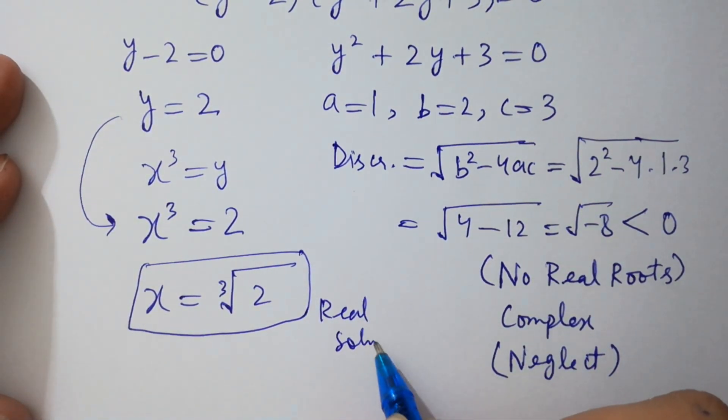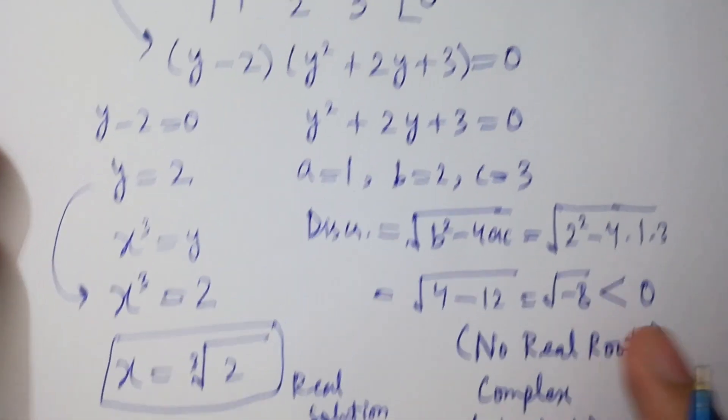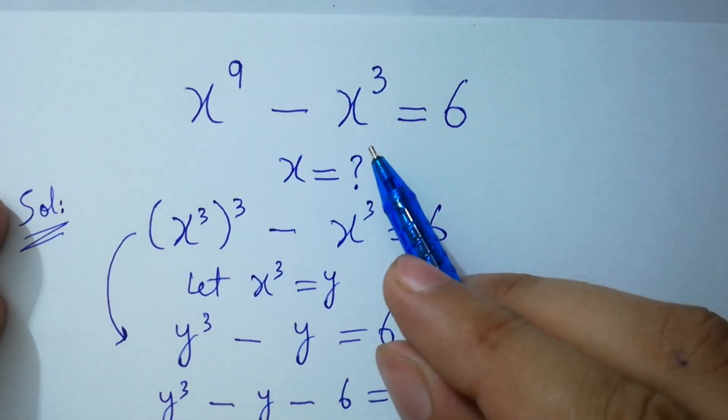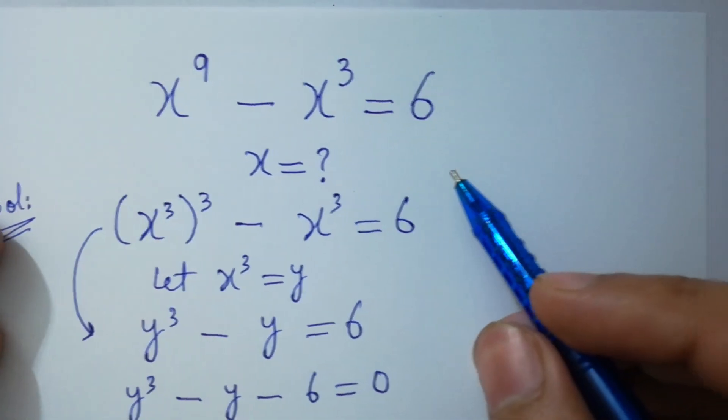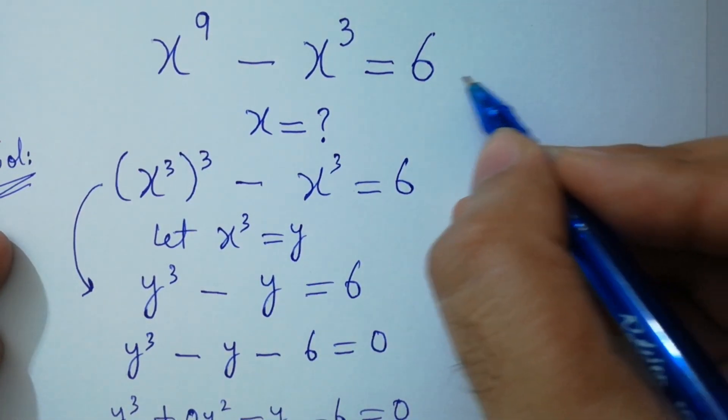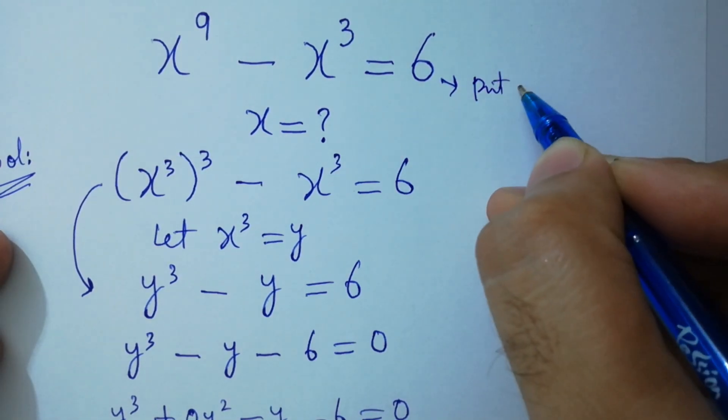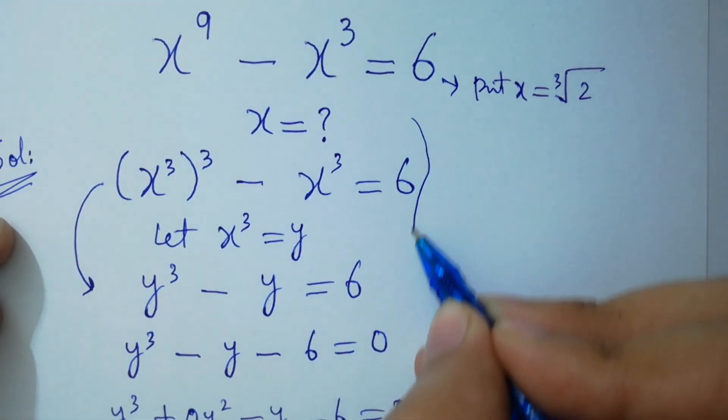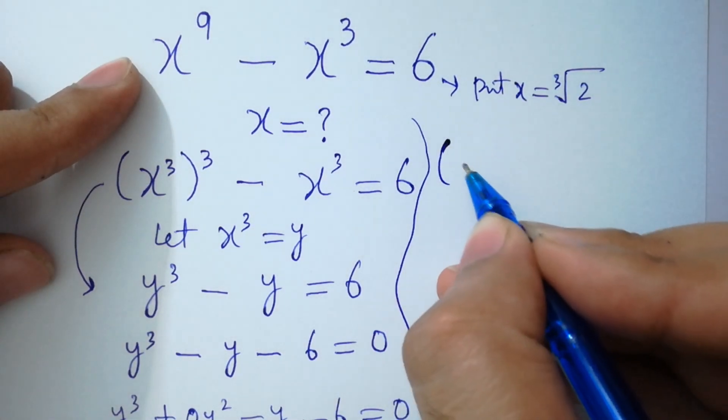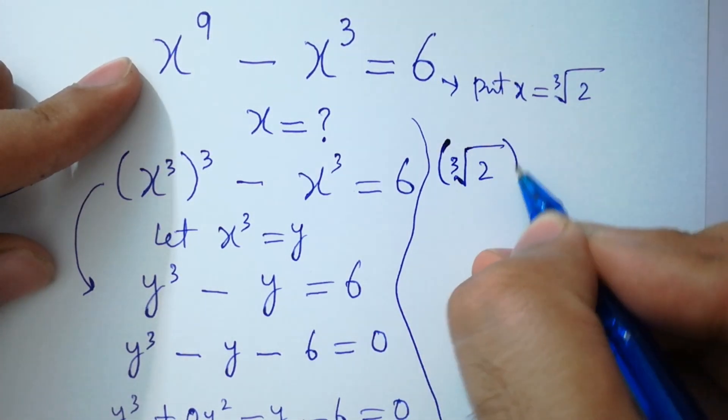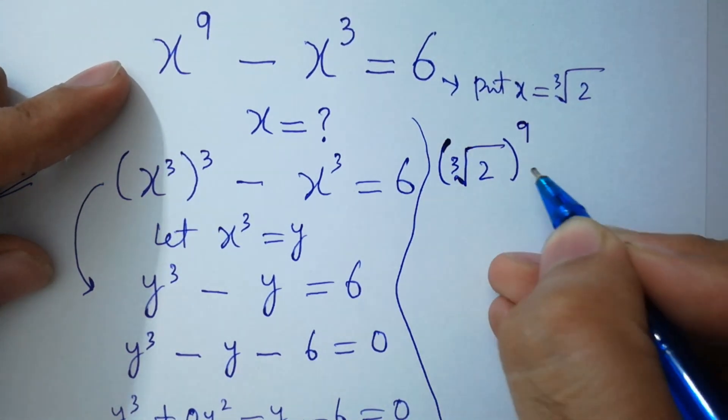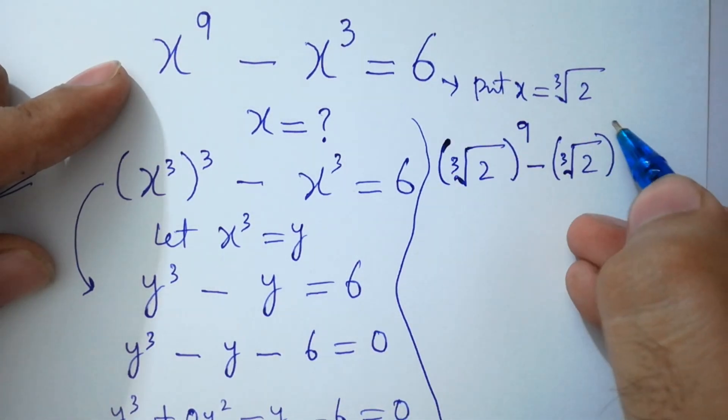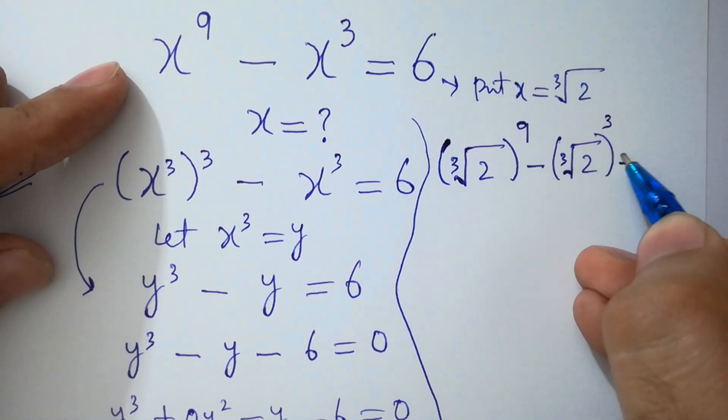Now verify, x to the power 9 minus x cube equal to 6. I am going to verify here, put x equal to cube root of 2. Here, cube root of 2 to the power 9, equal to 6.